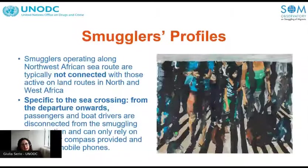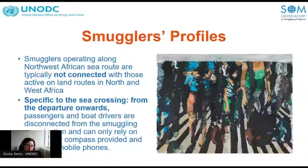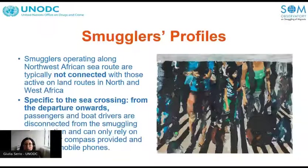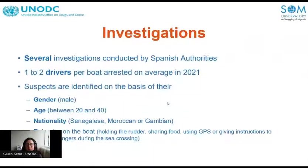Looking at the profile of smugglers: those operating along the northwest African sea route are typically not connected with those active on land routes. They are active specifically at the departure from the northwest African coast for the sea crossing. From the departure onwards, passengers and boat drivers are disconnected from the smuggling organization and can only rely on the GPS or compass provided and their own mobile phones, using connections from Morocco and Spain to make distress calls.